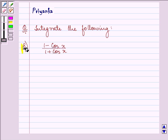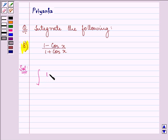Now the function which is given to us is 1 minus cos x divided by 1 plus cos x. Now proceeding on with the solution, we need to integrate this function with respect to dx.